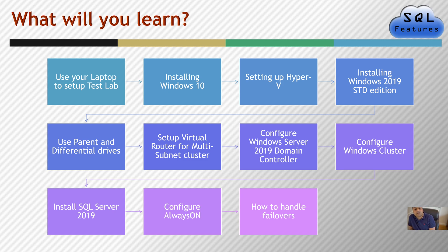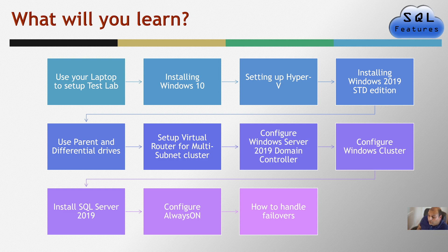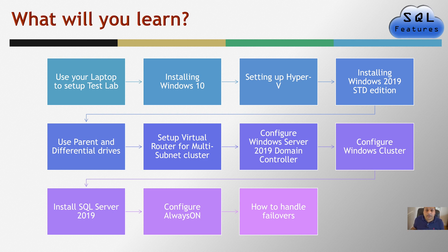You will learn how to set up a virtual router which will allow multiple subnets to connect to each other as well as each subnet to reach out to the internet. Then you will learn how to configure a 2019 domain controller, which is what we'll use to configure Always On later on. Then you'll learn how to configure a three-node Windows cluster, how to install SQL Server 2019, and finally how to configure Always On, do all the testing, perform failovers, and how the application will continue to be available during failovers.